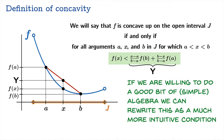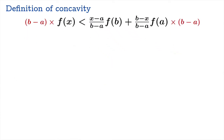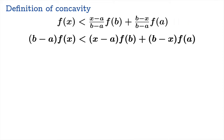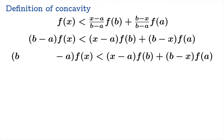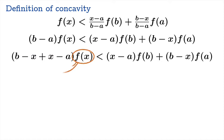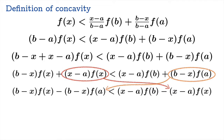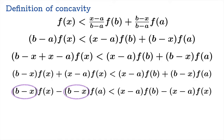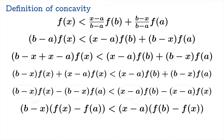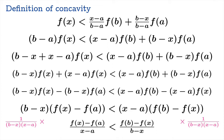If we do a good bit of simple algebra, we can rewrite the concavity condition as a much more intuitive inequality. We multiply both sides by (b − a) to clear the fractions, then subtract x and add x to enable factoring. We can distribute f(x) across the sum, subtract terms from both sides, factor out (b − x) and (x − a), and divide through. The original inequality is then equivalent to: (f(x) − f(a))/(x − a) < (f(b) − f(x))/(b − x).